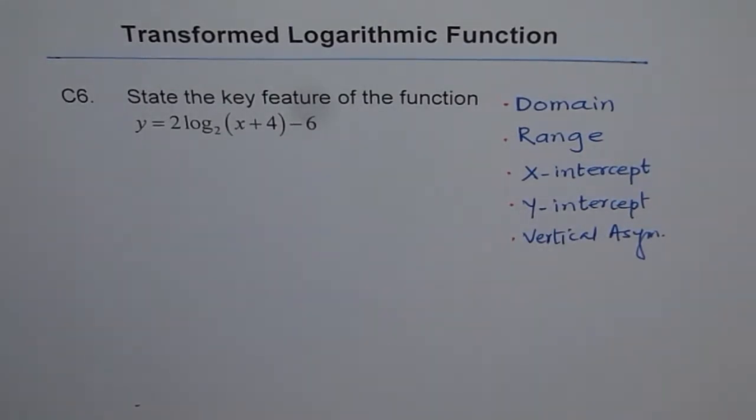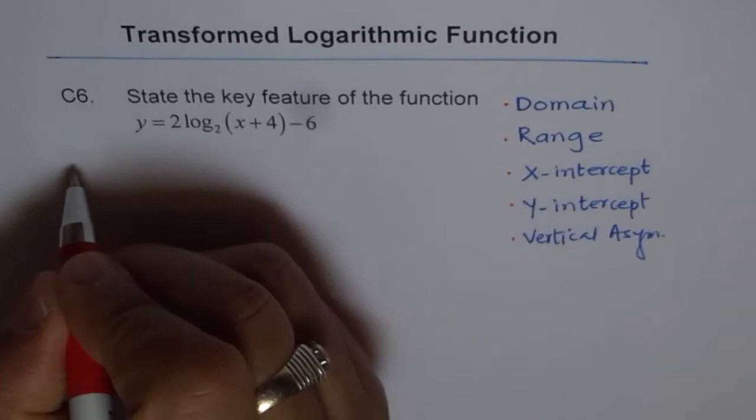Now, to find domain, it is important to find where the vertical asymptote is. So we'll start with vertical asymptote.